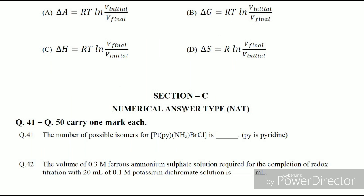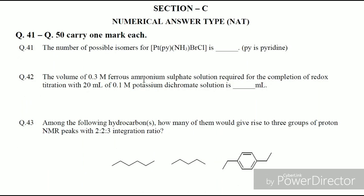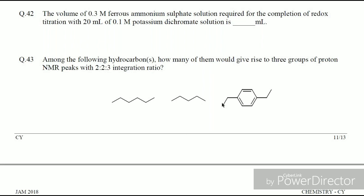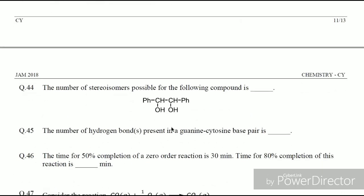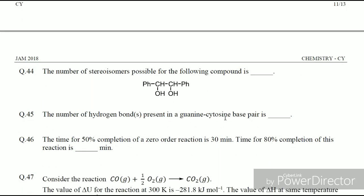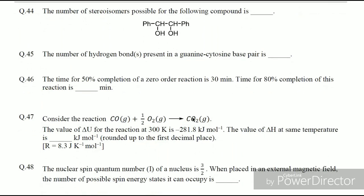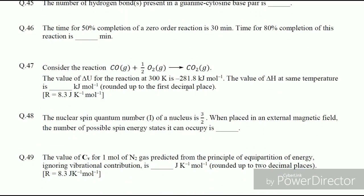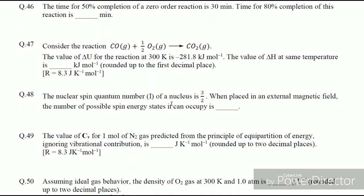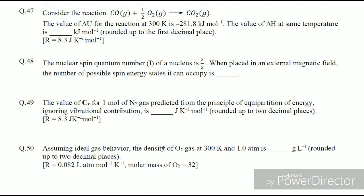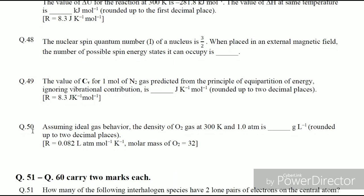Now Section C, questions 41 to 50, which are one-mark numerical answer type questions: the first and second questions are inorganic chemistry. The third is organic chemistry but not directly from my material. Question 44 is directly from my material. The cytosine base pair hydrogen count question is also directly from my material. Two numerical questions from chemical kinetics, a thermodynamics question, an NMR spectroscopy question, a gaseous concept question, and question 50 on density are all directly from my material. That's 7 questions = 7 marks. Running total: 33 + 7 = 40 marks.